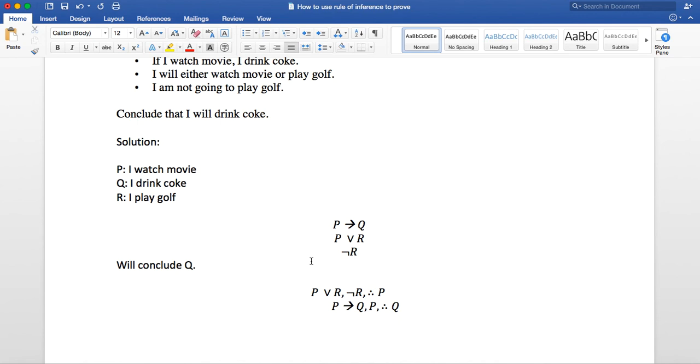Let's give a quick review again. You have three hypotheses. Now, when you combine P or R and not R together, you will conclude P. So P or R, and you know either P or R, but you don't have R, then you must have P. Now, P implies Q, and you have P now, so you must have Q. That's the proof.